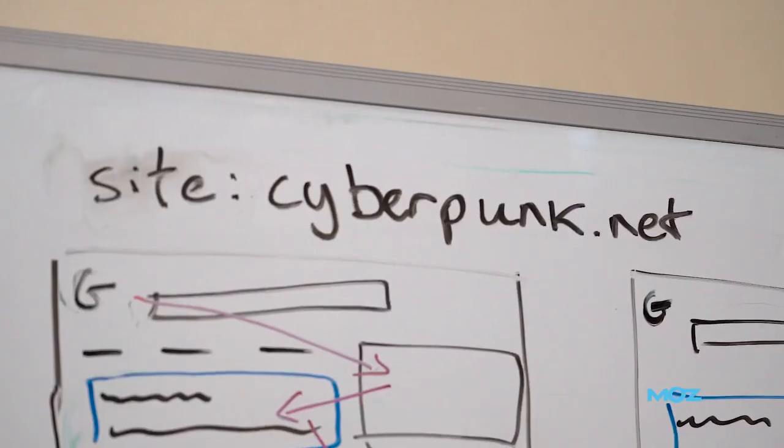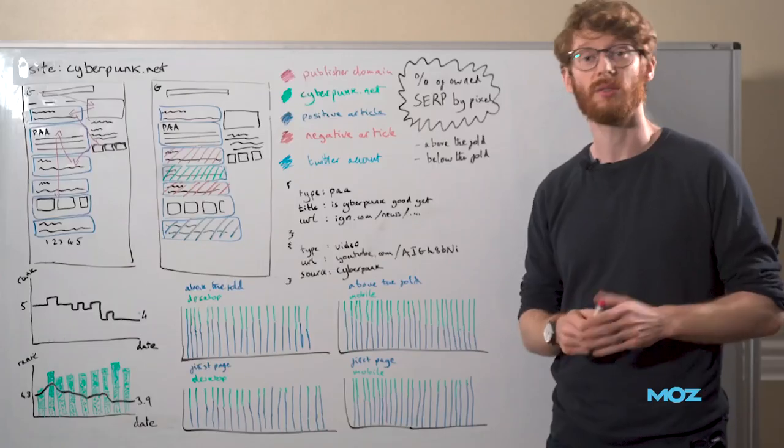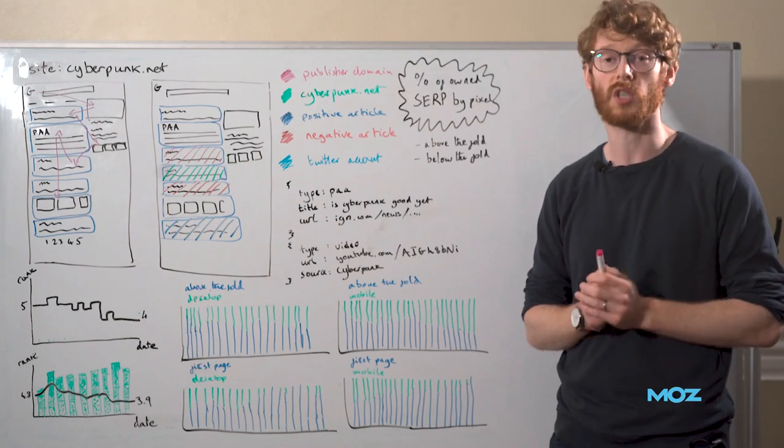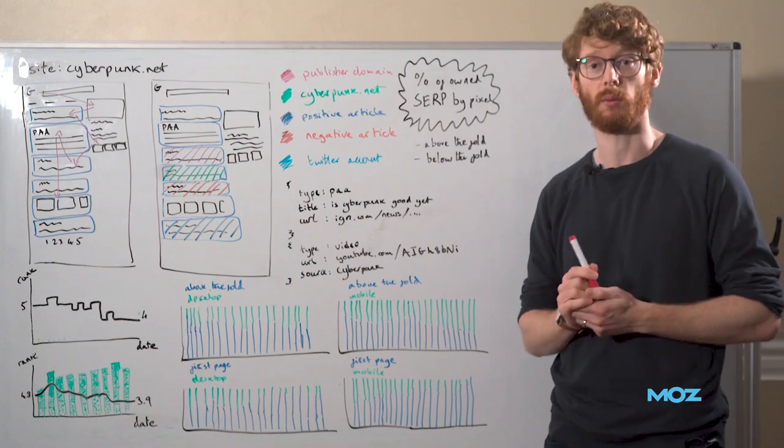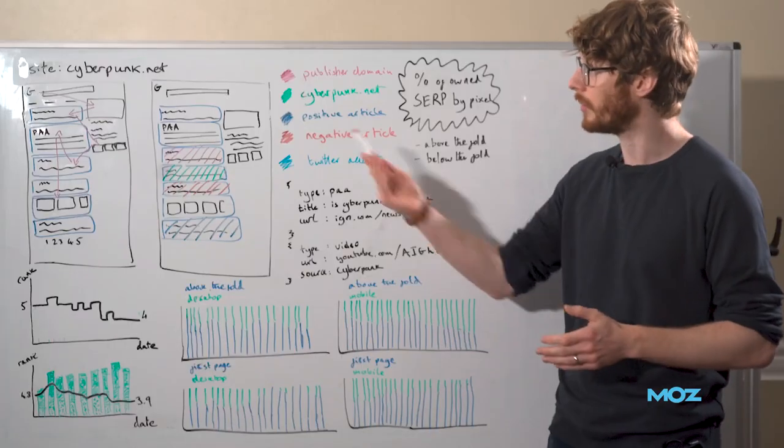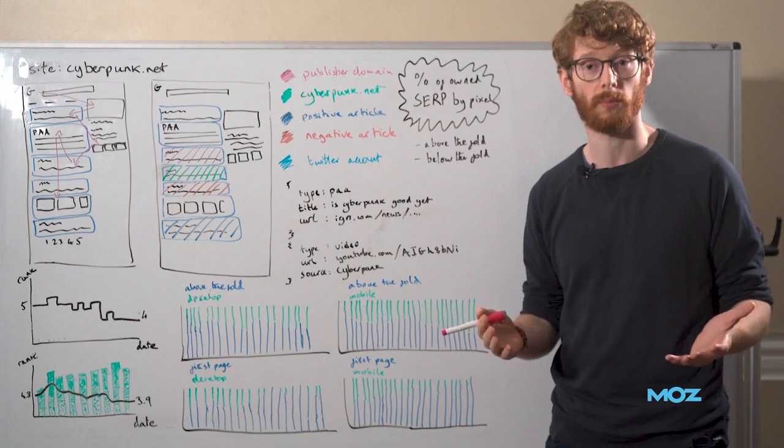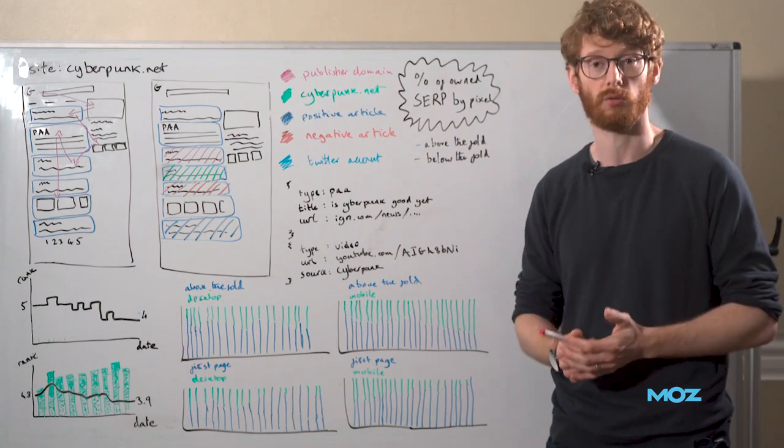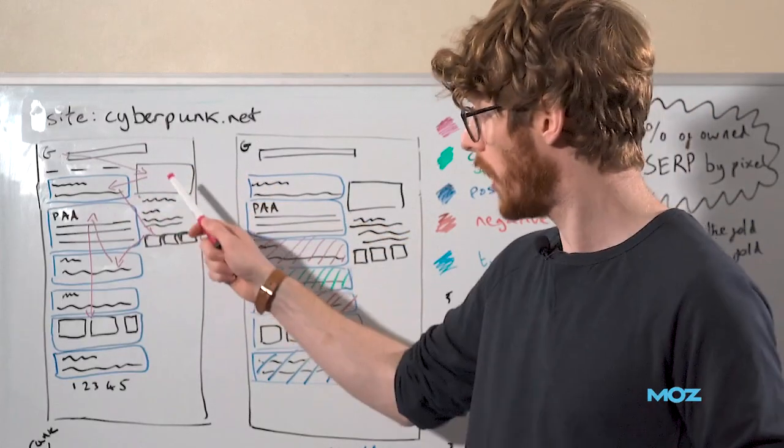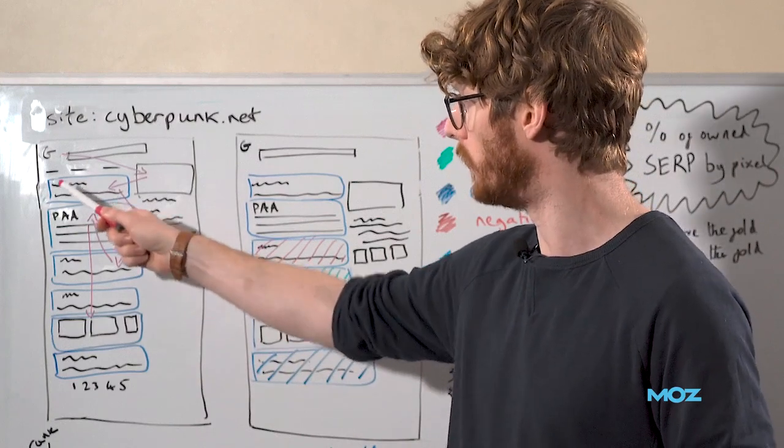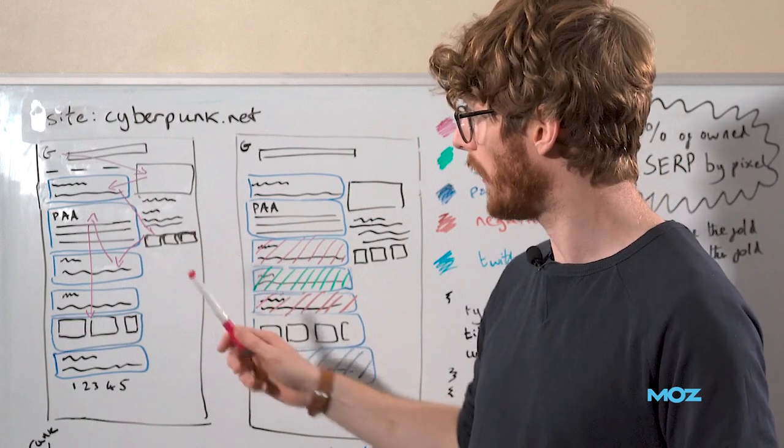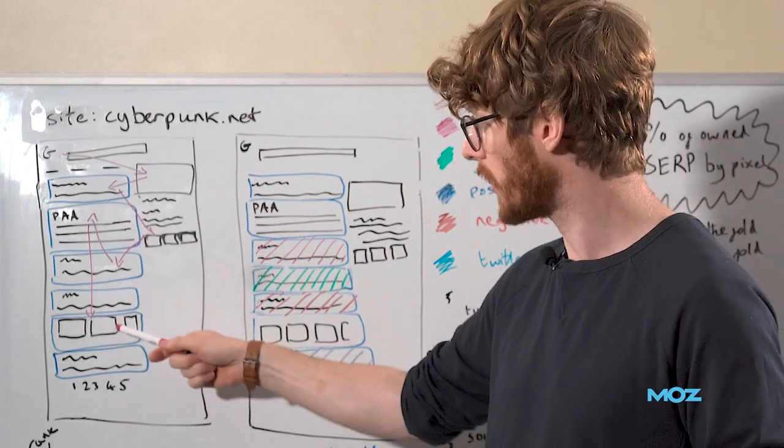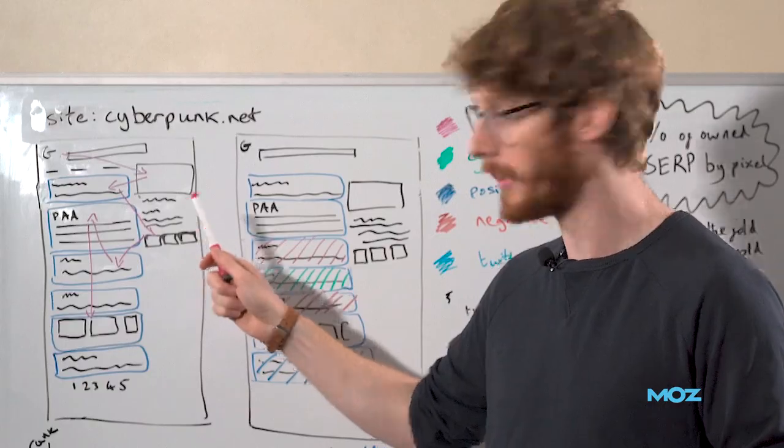So I'm going to use the example up here of Cyberpunk.net. There was a video game that came out a little while ago called Cyberpunk 2077, and I'm picking this as an example of a product that had some real brand reputation problems. It did not have a good launch. So if you were an SEO working for them, how might you have gone about controlling and measuring how well you were controlling their brand experience? Over here we've got our SERP with some fairly standard blue link results with a title and meta description. We've got some other rich elements, things like a video block down here, a people-also-ask block, and a knowledge block over to the side.